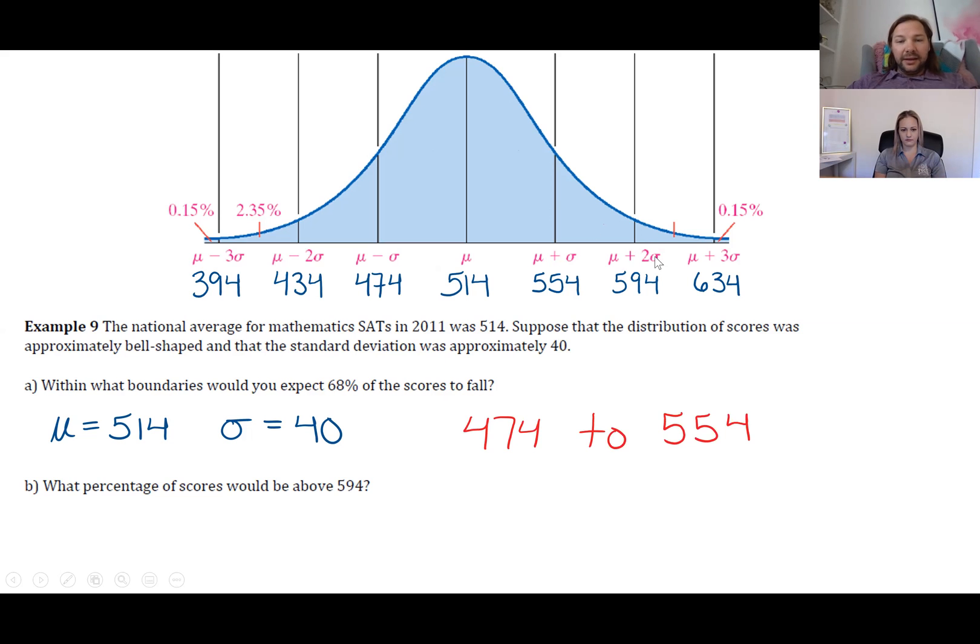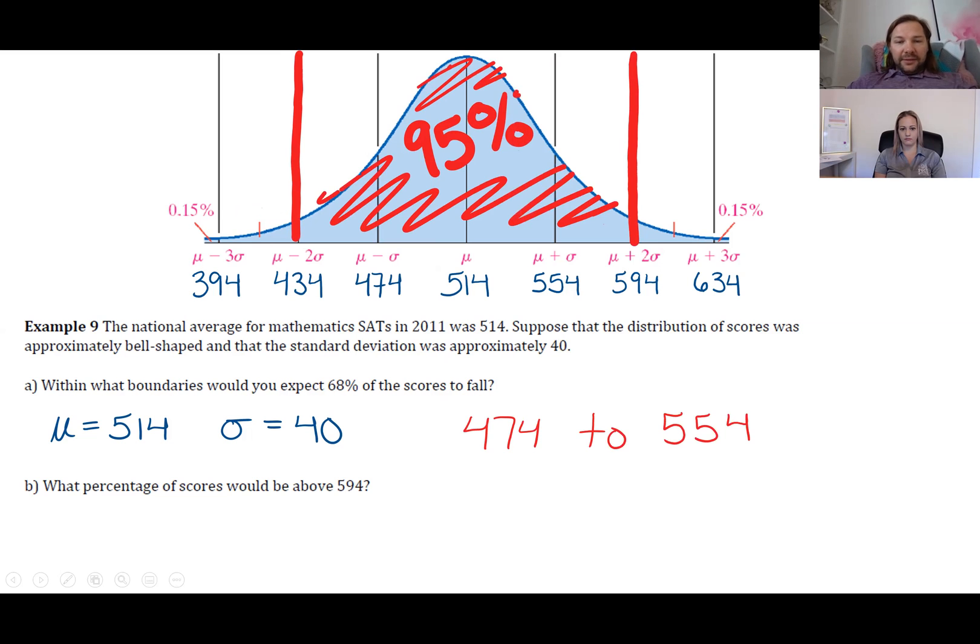...outside of two standard deviations and then take half of it, because half will be on this side and half on the other. According to the empirical rule, 95% of the data should fall within two standard deviations, which means 5% should lie outside in the tail values. So if 5% is outside, divide by 2 and you get 2.5% above 594.